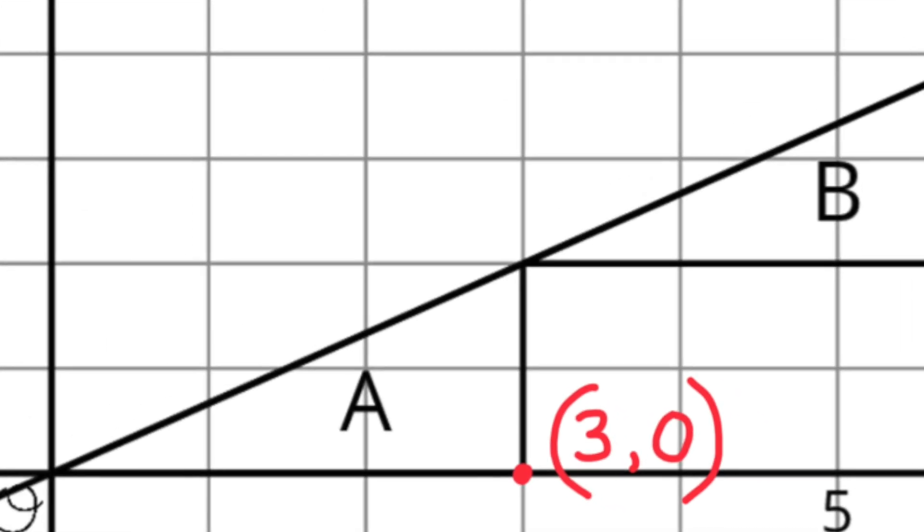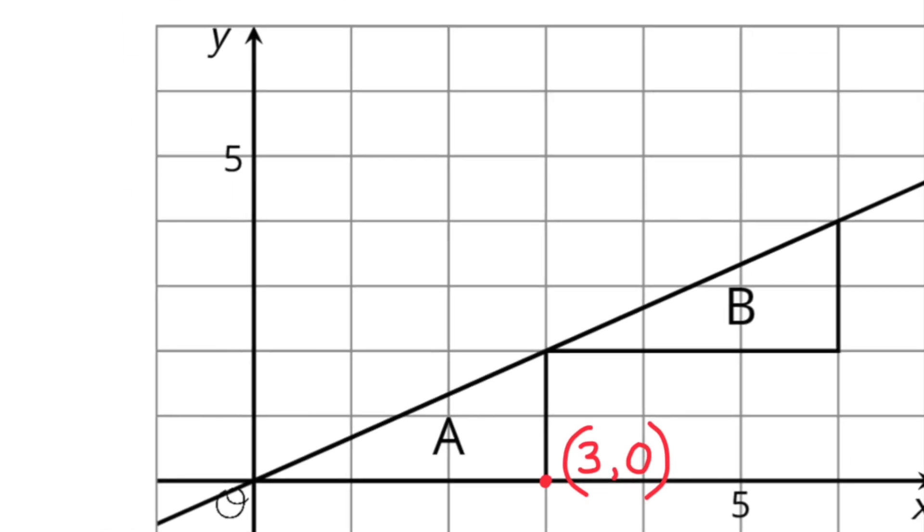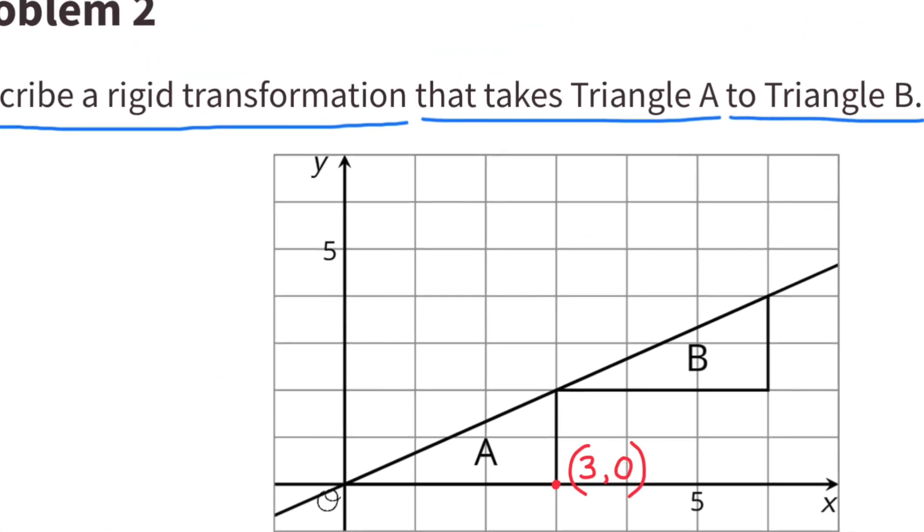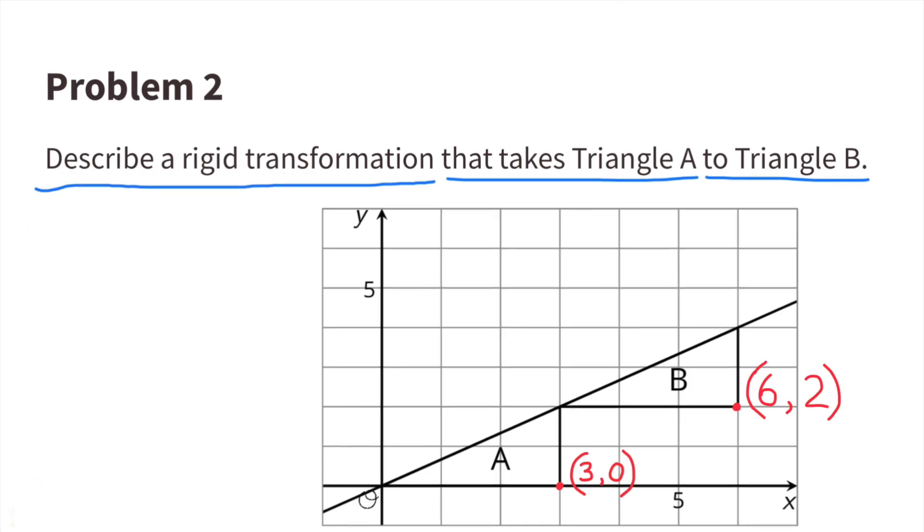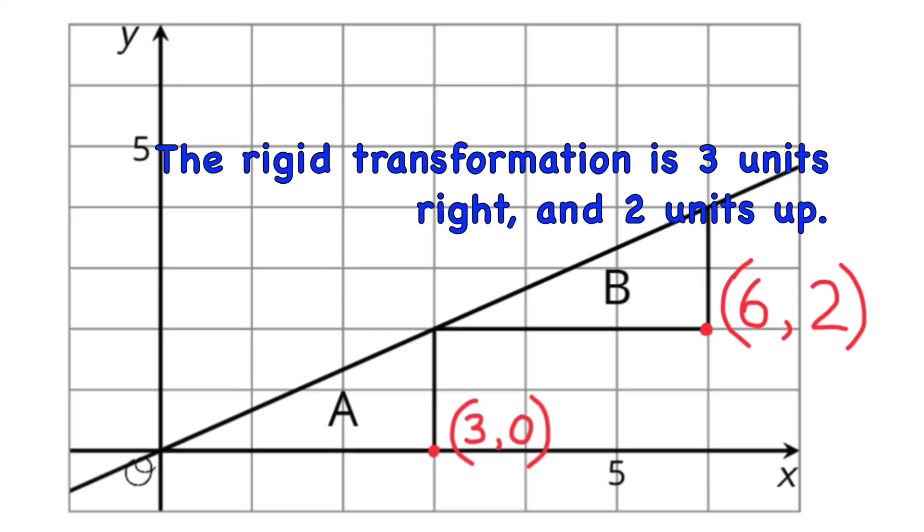Let's start by looking at this point, located on the bottom right corner of Triangle A. The coordinates are 3 and 0. The corresponding coordinates on Triangle B are 6 and 2. The rigid transformation is 3 units to the right and 2 units up.